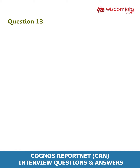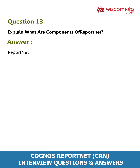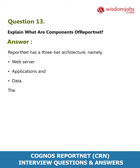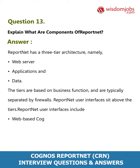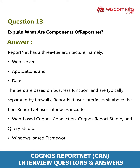Question 13: Explain the components of ReportNet. Answer: ReportNet has a three-tier architecture — Web, Application Server, and Data tiers. The tiers are based on business function and are typically separated by firewalls. ReportNet user interfaces sit above the tiers and include web-based Cognos Connection, Cognos Report Studio, Query Studio, and windows-based Framework Manager.